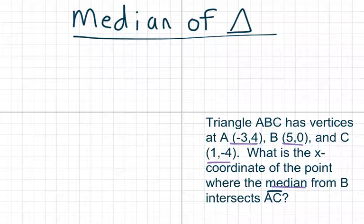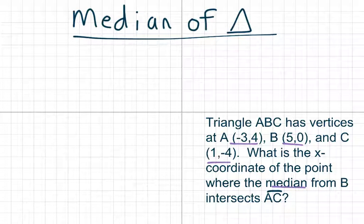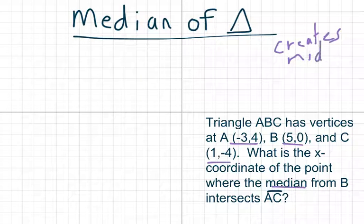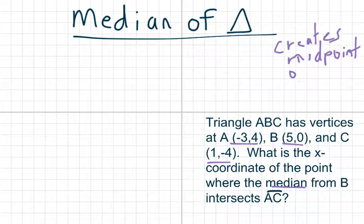Let's talk about median. Median is just the line that's drawn from a vertex to the other side and it creates a midpoint. So it creates a midpoint on the opposite side.